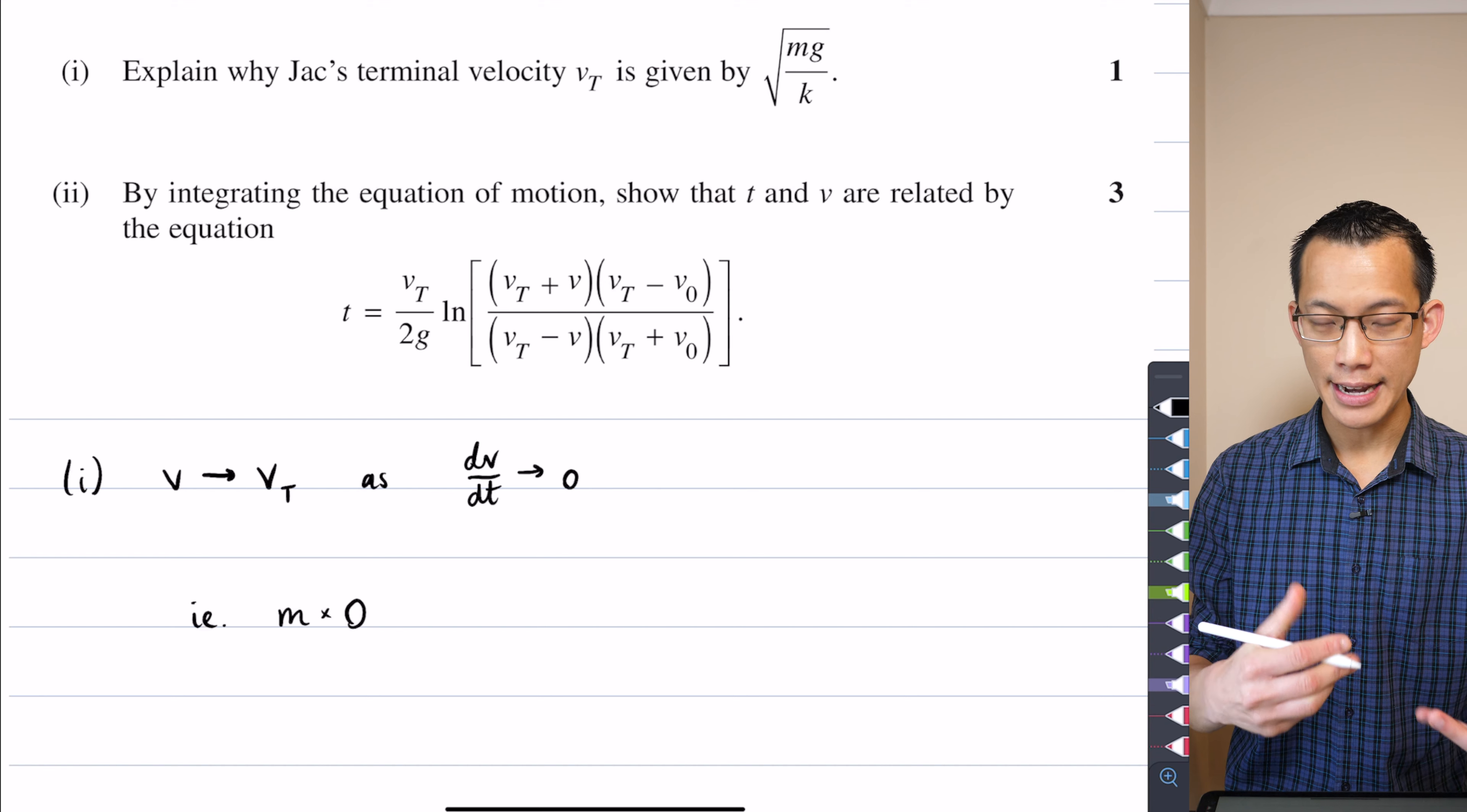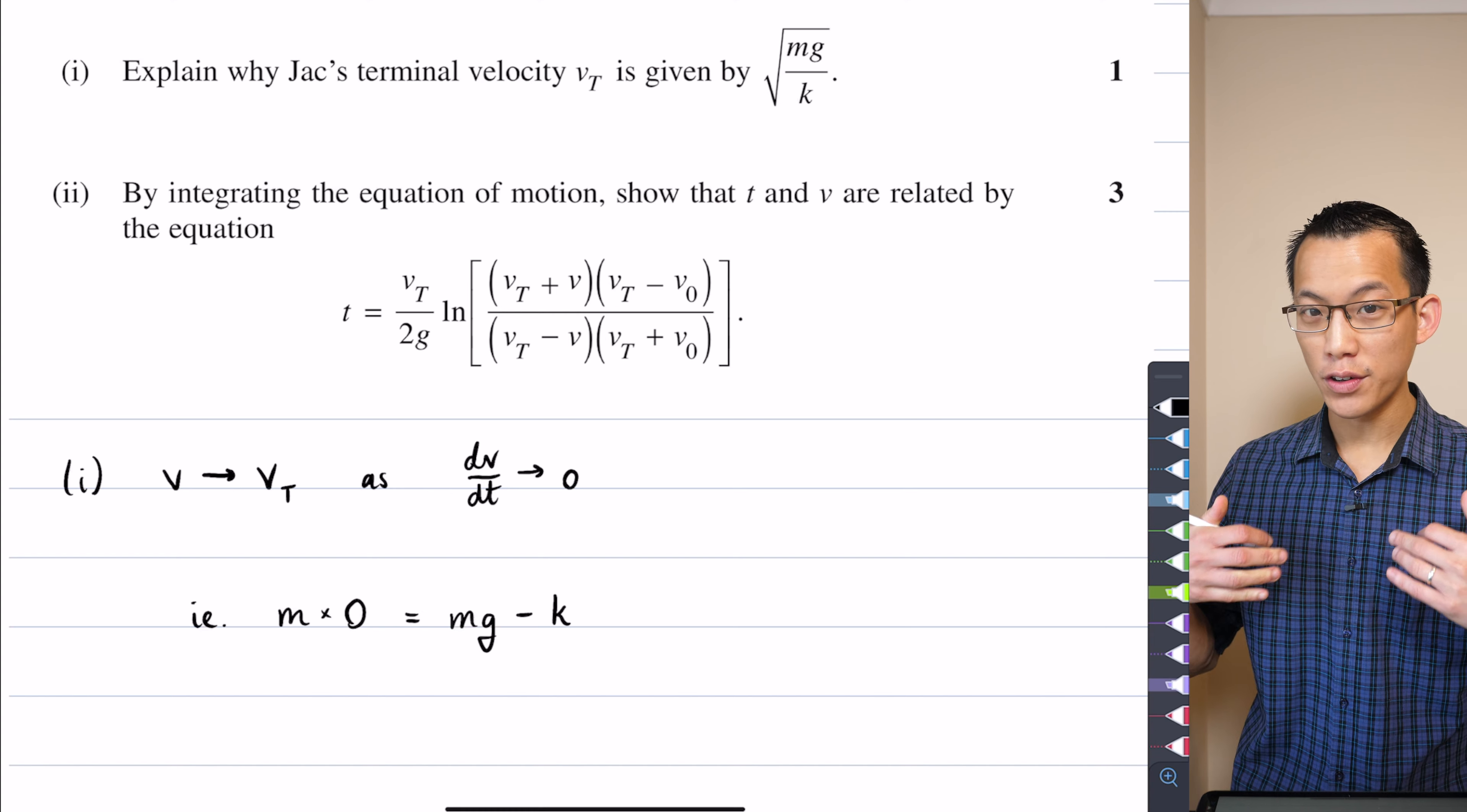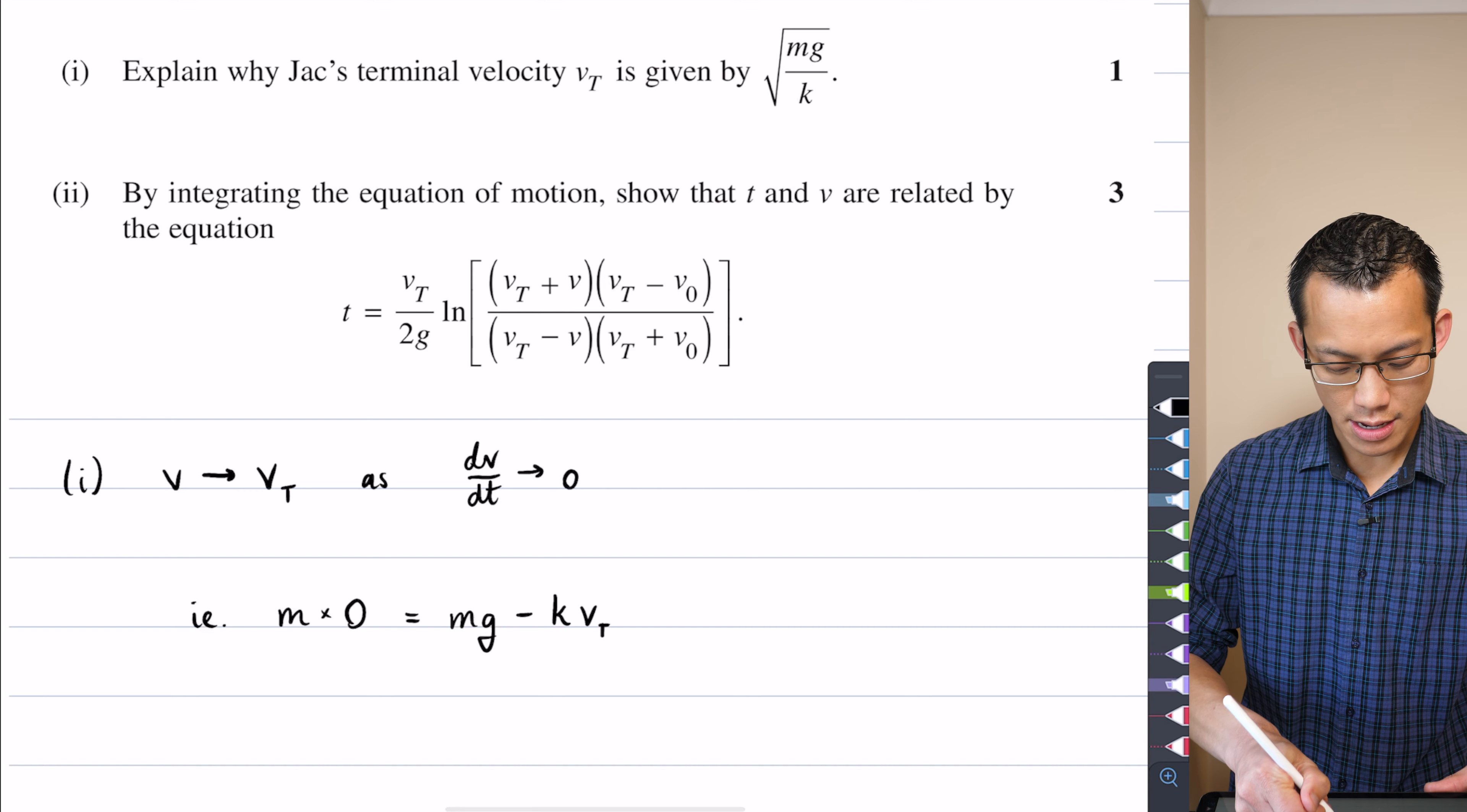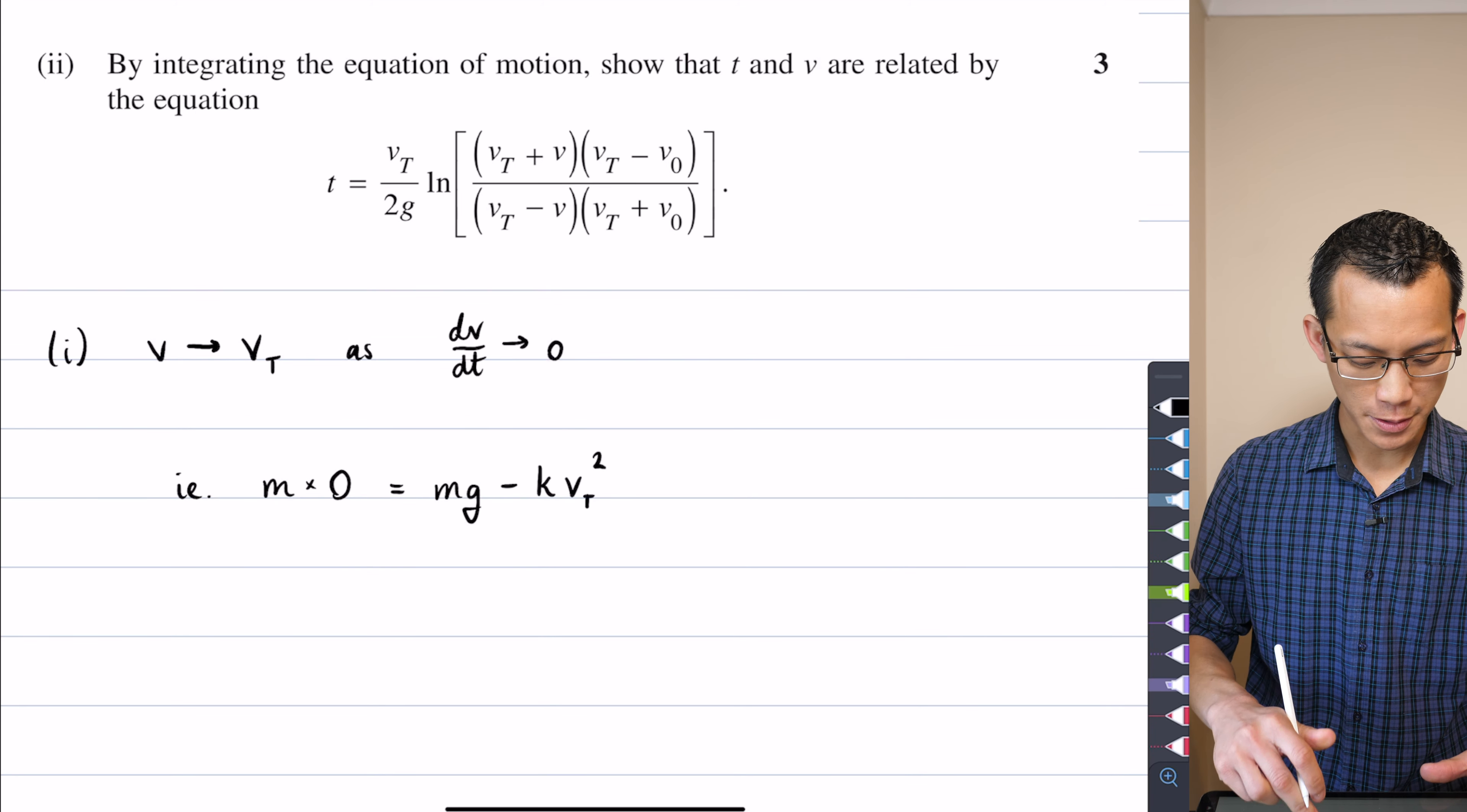So I've got M times dV dt on the left-hand side, which in this case I'm regarding it as zero. And that's equal to, on the right-hand side, I've got my gravity force. And then I would normally say Kv squared, but here I'm now saying, well, if I've gotten to this place, this mythical theoretical place where my acceleration is zero, then I won't have Kv squared. I'll have K of VT squared, right? Does that make sense? And then there's really not much more to getting, I mean, you can see the result that's required to prove is VT as a subject. So I just need to do some very basic rearrangement.